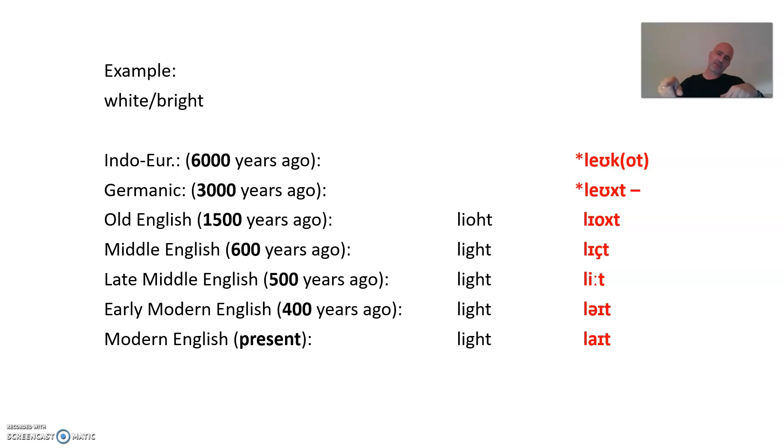And then later on, this leet, 100 years later, was diphthongized into late. And then there you have a dissimilation, probably something like 200, 300 years ago, it became light. So this is the way from leukot 6,000 years ago to present day light. You don't have to give me that, it's just an example to show you what historical phonology can do, and we will do some of these things later on. This is just by way of exemplifying what we are going to do.